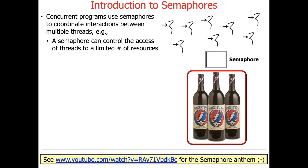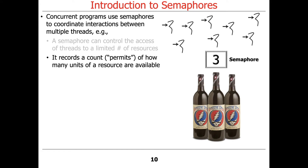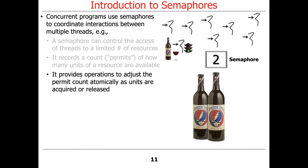We're going to use a semaphore to control access of multiple threads to a limited number of resources — in this case, the wine bottles. A semaphore records a count, referred to in Java as the permits count, of how many units of a resource are available — in this case, how many wine bottles we have. It also provides operations that will atomically adjust this permit count as units are acquired or released.